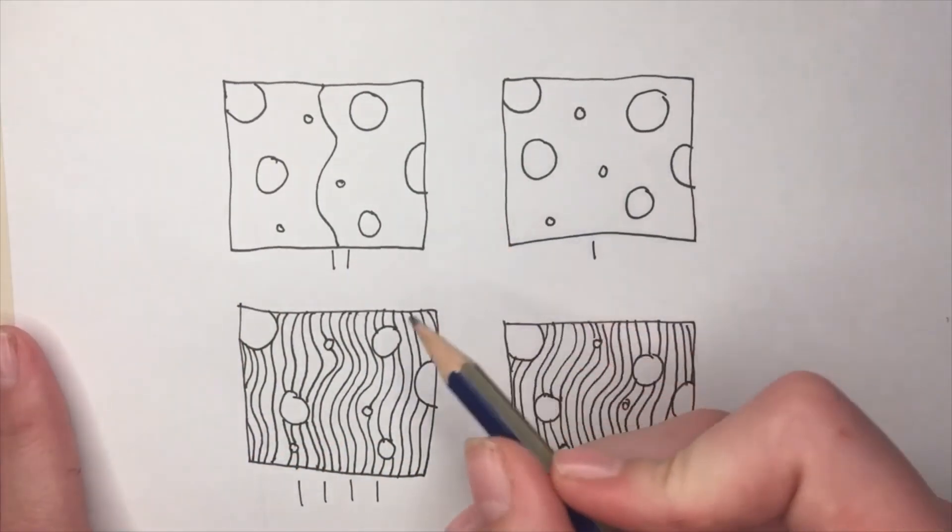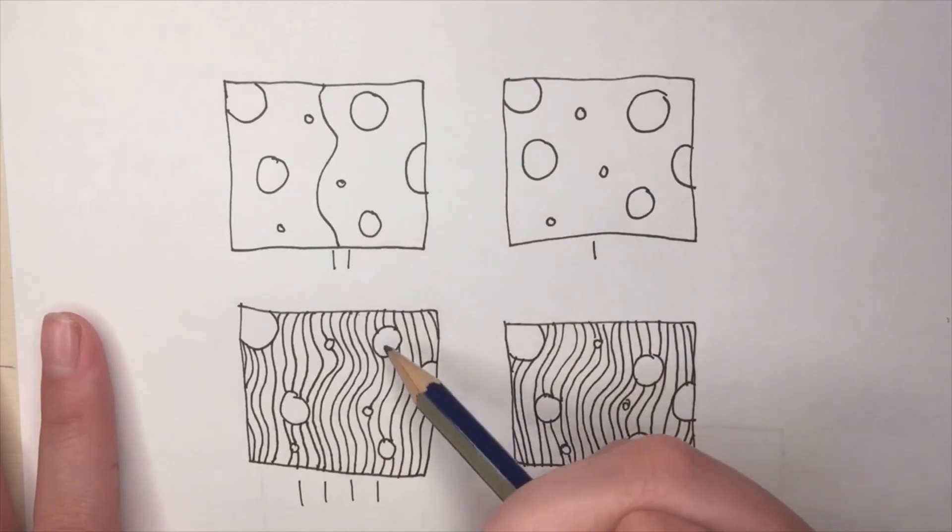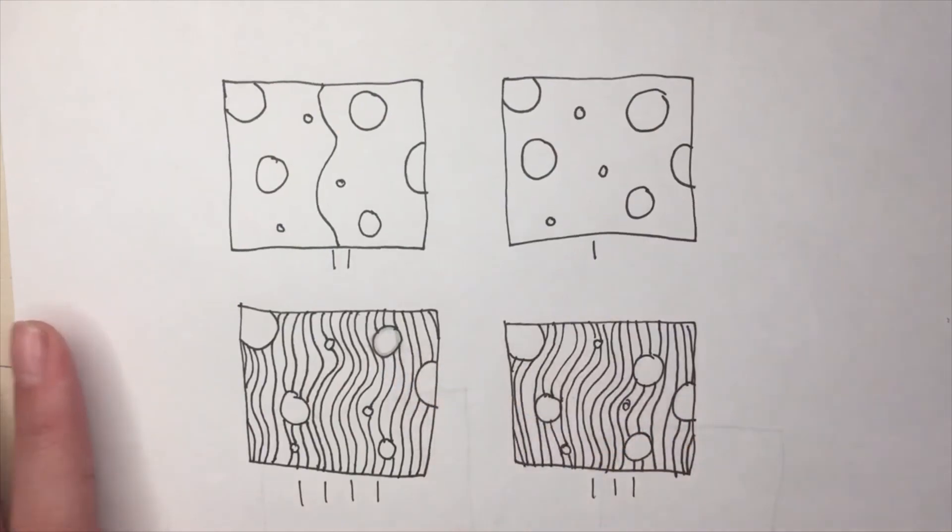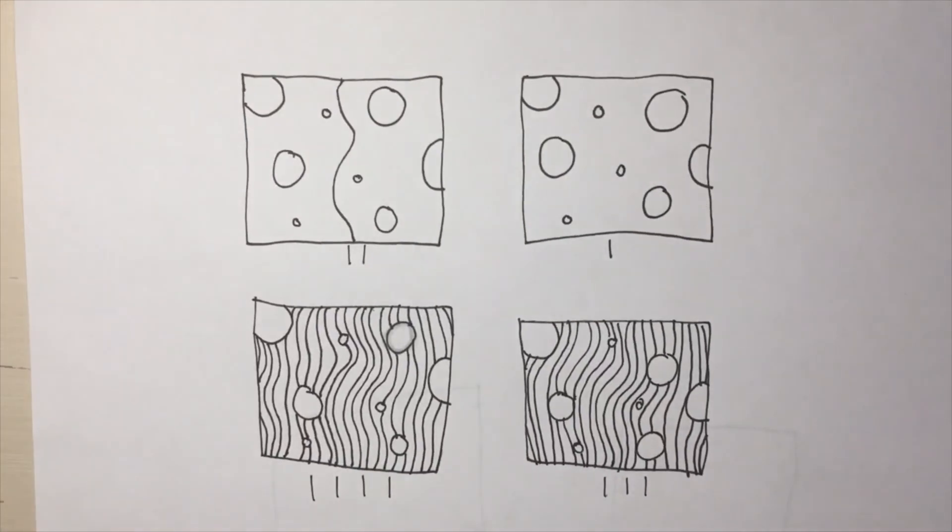This shading step just makes these circles look more 3D. All you're going to do is shade the outside of the circle. Like this. I'll come back when all of my circles are shaded.